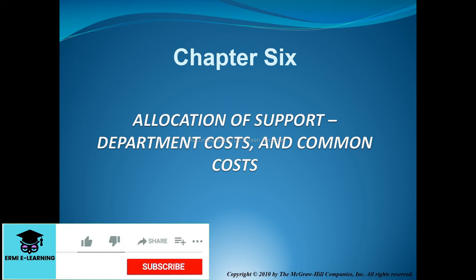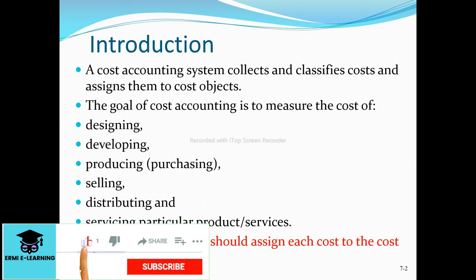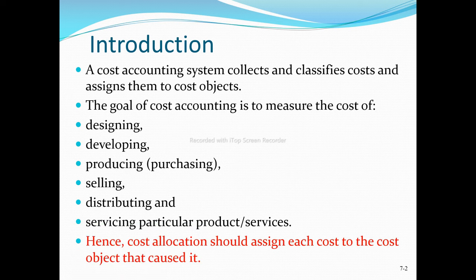In the introduction to cost accounting, cost accounting is the system of collecting, classifying costs, and assigning them to cost objectives. It systematically collects and classifies data based on characteristics, then assigns that cost data to the cost object — whether a product or service.